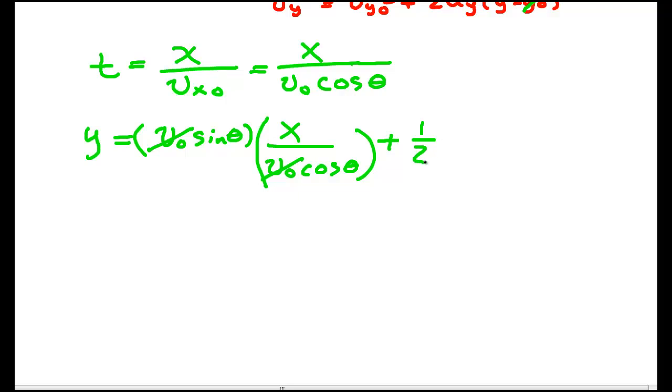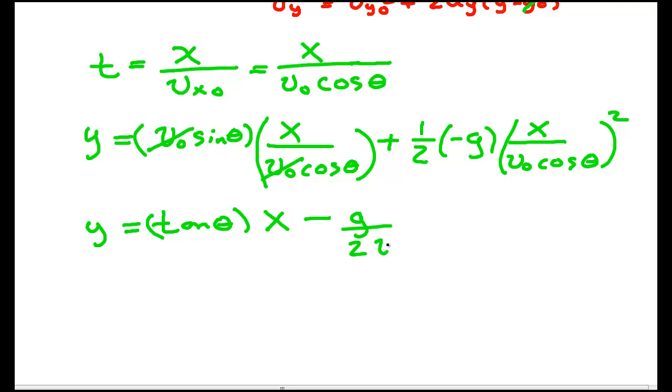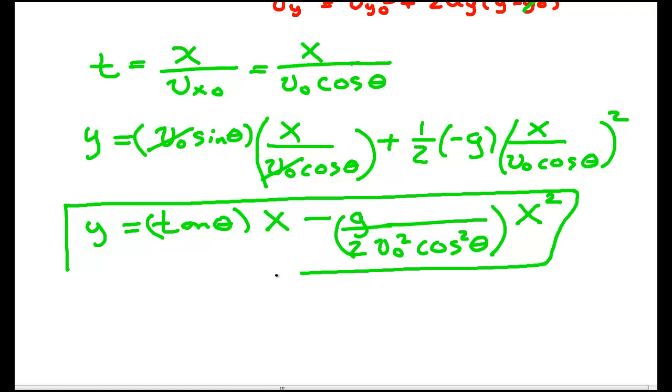Doing that, y is equal to VY0, but that's V0 sine theta. So that's VY0 here, and then I'm going to multiply that by t, x over V0 cosine theta. V0s will cancel. Plus one half minus g, and then I have t squared, that's x over V0 cosine theta squared.